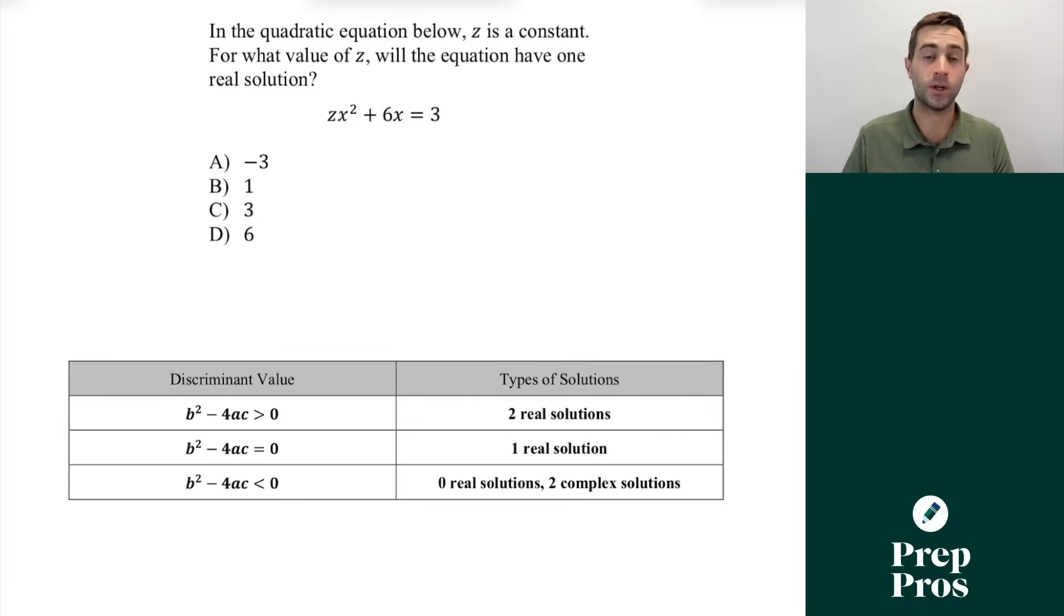Now another quadratic concept is going to block you from using Desmos. And this is questions about the discriminant. Anytime you see a quadratic, we have an x squared term, and it asks you about the number or type of solution, it's a discriminant question. So make sure you memorize this table from my book. Here we see in the quadratic equation below z is a constant. For what value of z will the equation have one real solution? Well, we need b squared minus 4ac to equal 0 to have one real solution.